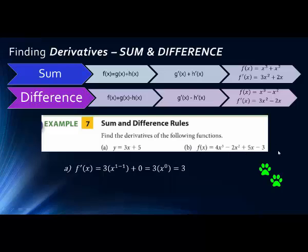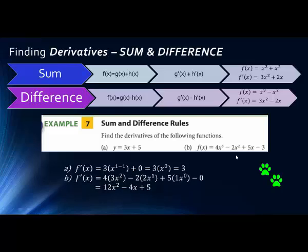Problem B looks more complicated but is straightforward once you've done a few of these. We take the derivative of each piece and leave the operator between them: the derivative of 4x cubed using the coefficient and power rules, minus the derivative of 2x squared, plus the derivative of 5x, and the constant goes to 0. Working through: 4 times 3x squared gives 12x squared, minus 2 times 2x gives 4x, plus 5 times 1. Simplifying, we get 12x squared minus 4x plus 5.